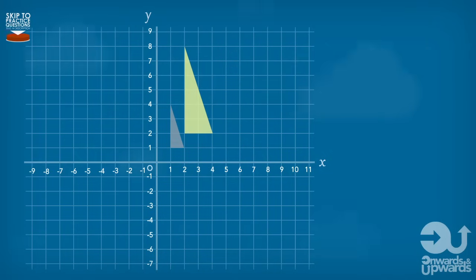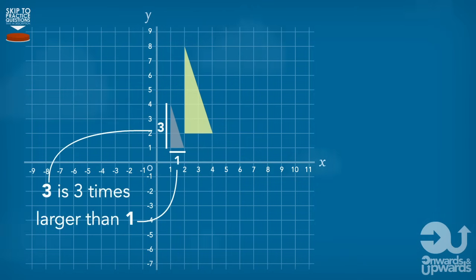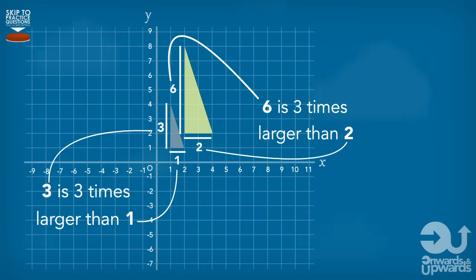So for example, this side is three times bigger than this side. And with the same sides of the enlarged shape, this side is still three times bigger than this side.